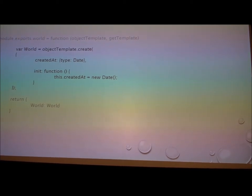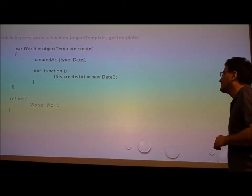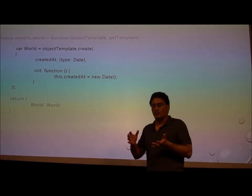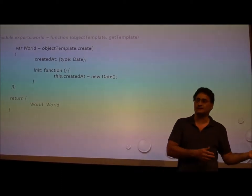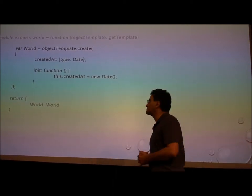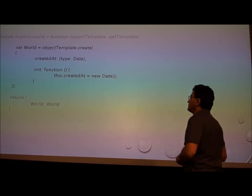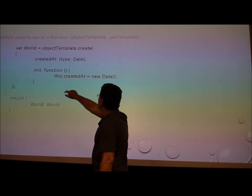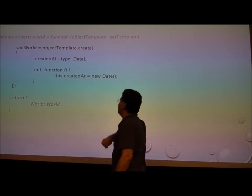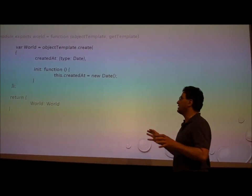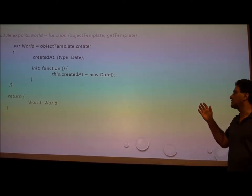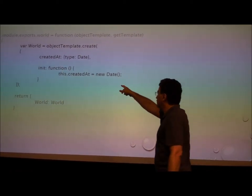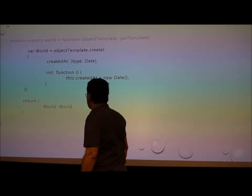Let's have a look at a real-world hello world example. This is really showing the type system. In our type system, we don't use the word class because ES6 has classes, so we use the term object template, which is effectively a class. Here we create an object template called World. It has one property, createdAt, and its type is Date. In the type, you can put any kind of built-in object type or you can put your own templates. This has an init function which will be called when it's created, which will just basically set the date.